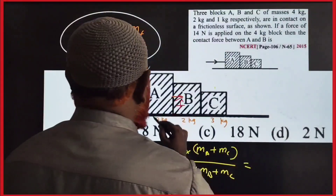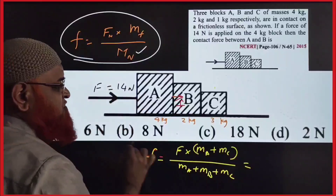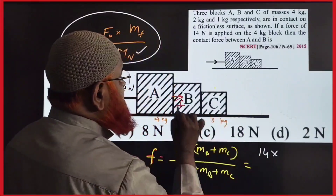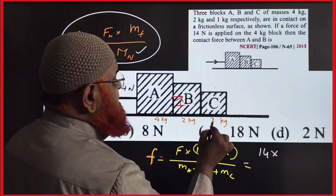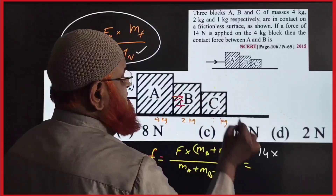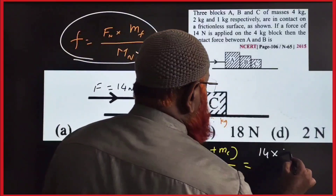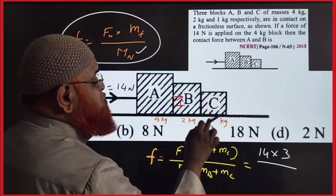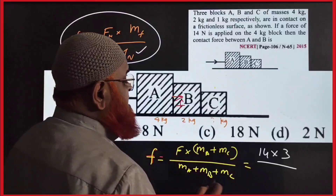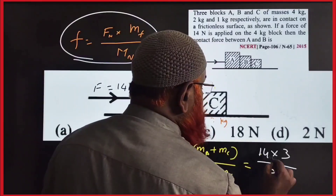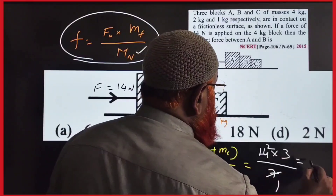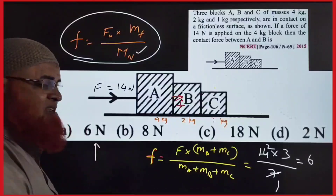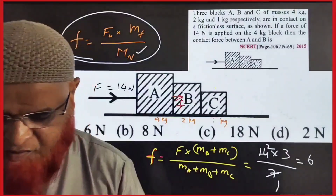Net mass means all 3 blocks. The net force acting is 14. B and C are 2 and 1, so that is 3. The net mass is 4 plus 2 plus 1, which is 7. So the answer is 14 into 3 divided by 7, which gives 6 N. That is the shortcut formula.